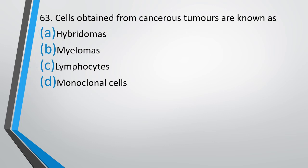Question number 63: Cells obtained from cancerous tumors are known as — hybridomas, myelomas, lymphocytes, or monoclonal cells? The correct answer is Option B, i.e., myeloma cells.